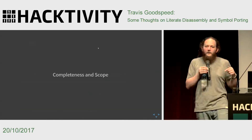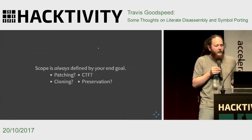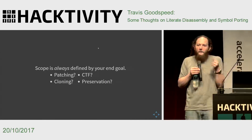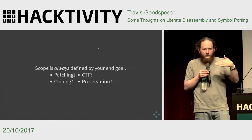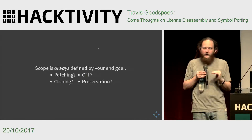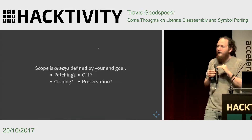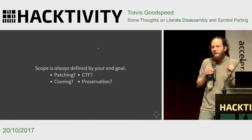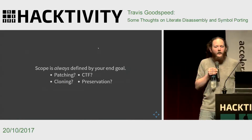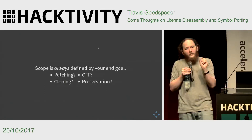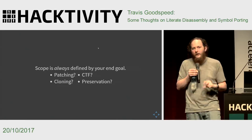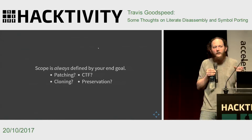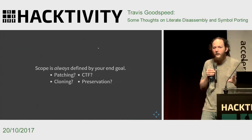You also need to care about completeness and scope. Scope is always controlled by your end goal. Are you trying to patch your target? In which case, you need a few symbols, but you really need those symbols. Are you trying to copy it? In which case you might need to know all of the behavior of the target, but only the difficult-to-reproduce parts like the central algorithm. Are you doing this for a capture the flag competition? In which case you might have very little code but also very little time. Or are you doing this for preservation? In which case popping the copy protection and allowing the old game to run in a modern emulator might be the only goal.